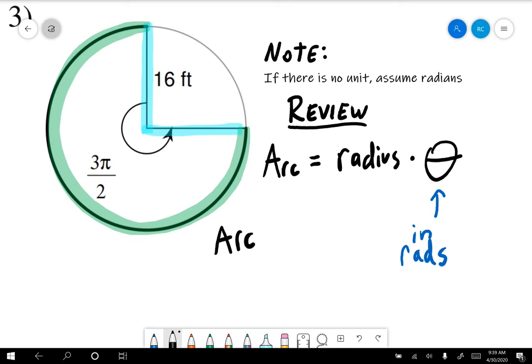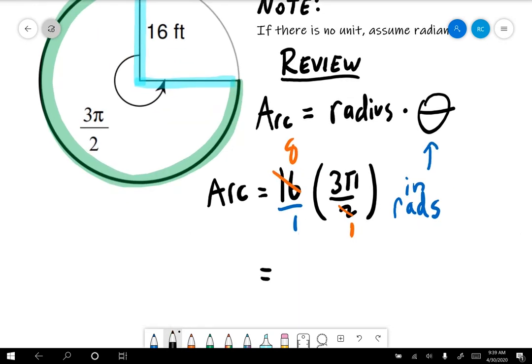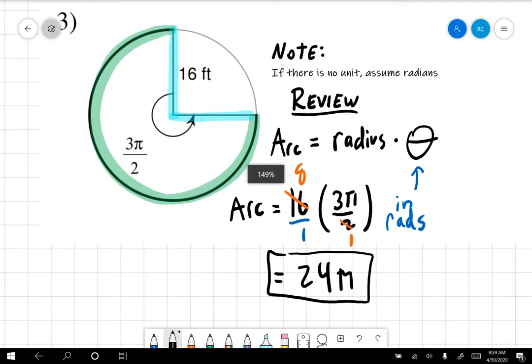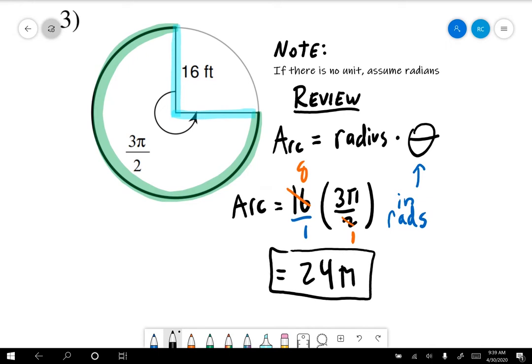So the arc would equal the radius, which is 16 feet, times 3π/2 radians. 16 is over 1—remember, any whole number is actually a fraction over 1. 16 and 2 are both divisible by 2, so we get 1 on the bottom, 8 on the top. Multiply straight across: 24π. We're going to leave the answer exact this time.